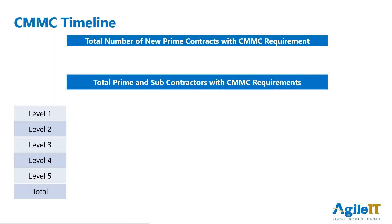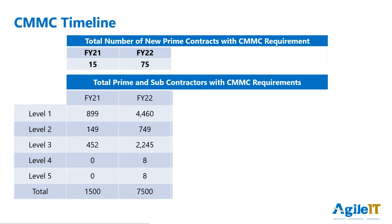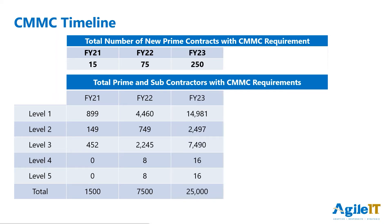So let's look at what that CMMC rollout looks like. In fiscal year 2021, we're going to see 15 new contracts with CMMC language, affecting an estimated 1,500 contractors. In fiscal year 2022, we see 75 more contracts with CMMC language, affecting an additional 7,500 contractors, including the first Level 4 and Level 5 requirements. In 2023, the number of new prime contracts jumps to 750 with 25,000 new affected contractors.